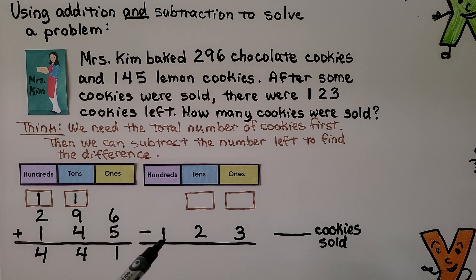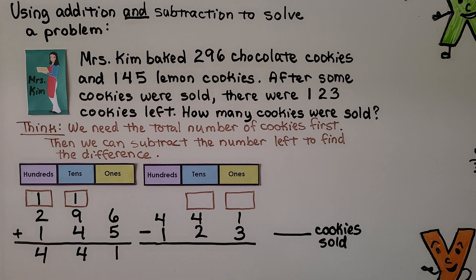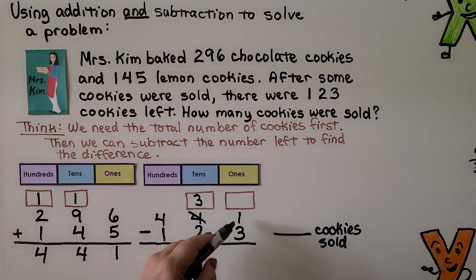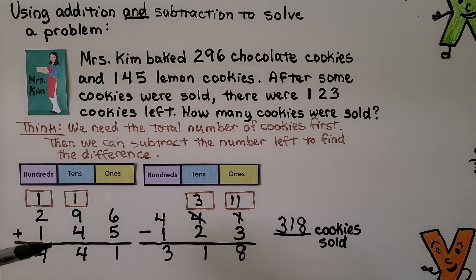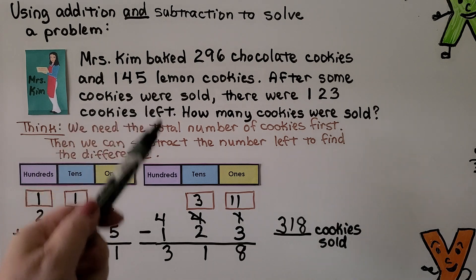If we take away the cookies that were left over, we'll know how many were sold. So we put 441 as the minuend and subtract 123. We've got one one and we're trying to take three away — we can't — so this four tens becomes three tens and we give that ten to the ones as ten ones. Now instead of one one, we have eleven ones. Eleven minus three is eight. Three tens minus two tens is one ten. Four hundreds minus one hundred is three hundred. We know 318 cookies were sold.